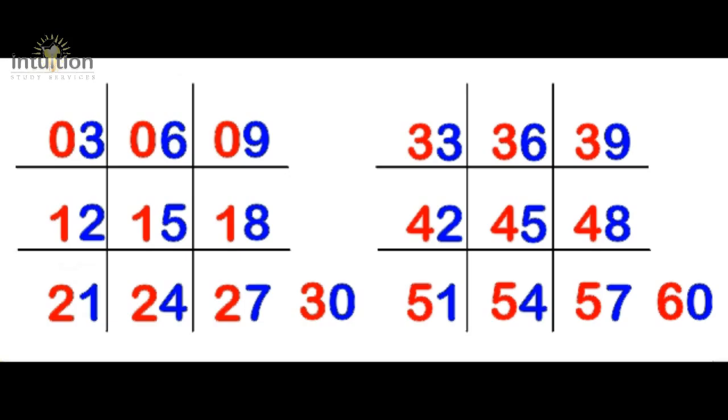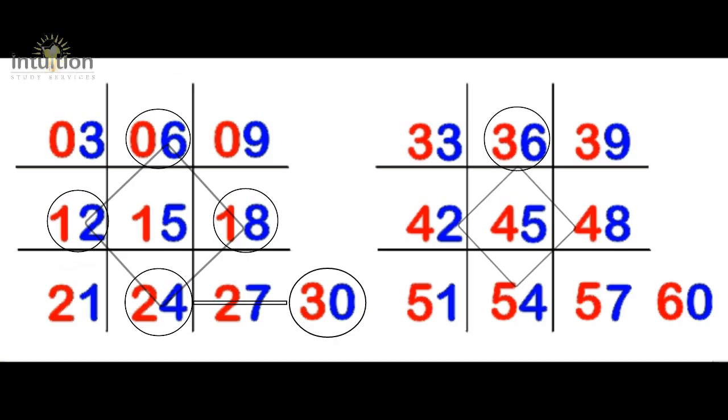Then what we want to do is we want to draw two diamond shapes in each grid. So we start from the 6 and we join from the 12, the 18 to the 24. And then we draw a line going to the 30. And also we do the same thing on the second grid. So we do 36, 42, 48, 54 and we underline 60. Okay. And there we have it.